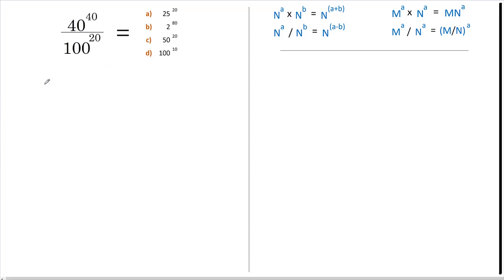To do this, let's take the 40 to the power of 40 and rewrite it as 40 to the power of 20 multiplied by 40 to the power of 20. This is all over 100 to the 20. All we've done here is use this formula and just broken it up, so we've gone backwards.